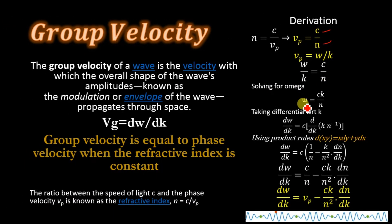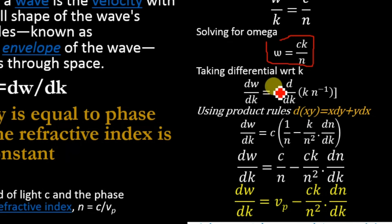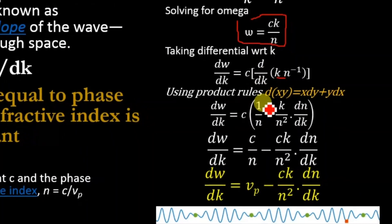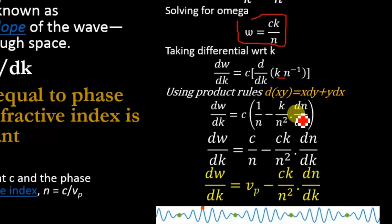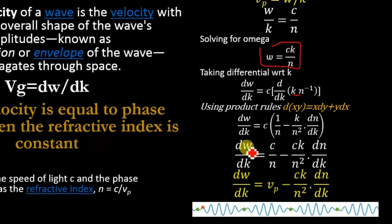Solving for ω gives ω = ck/n. Differentiating with respect to k and applying the product rule: dω/dk = c · d/dk · (k · n⁻¹). Since c is constant, we only differentiate k and 1/n. Using the product rule: dω/dk = c(1/n) − c · k · (1/n²)(dn/dk), which simplifies to dω/dk = c/n − (ck/n²)(dn/dk).